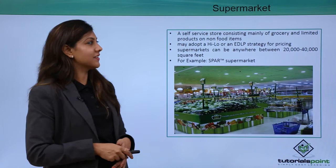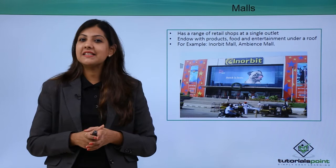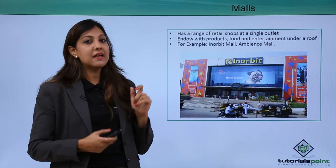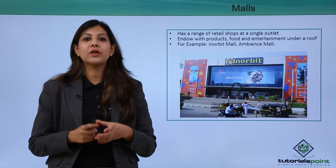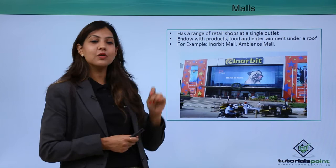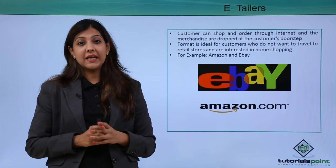Malls have been launched in India in recent years and can now be found in every city. They have a range of retail shops at a single outlet with food, entertainment, and retail products all under one roof. You can go shopping, watch a movie, or dine at restaurants — all in one place. Examples include Orbit Mall and Ambience Mall.